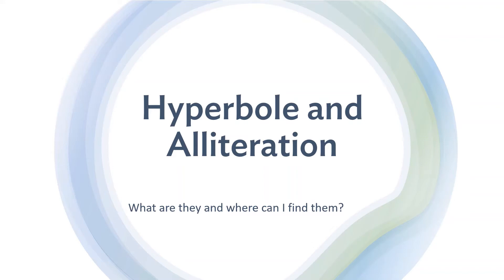Welcome back to our exploration of figurative language. Today we're going to talk about two types of figurative language: hyperbole and alliteration. Take a second and practice those — they're weird words. Practice saying them: hyperbole and alliteration.